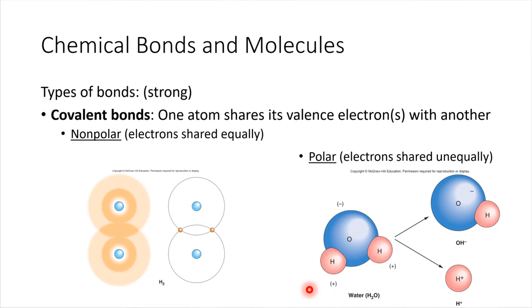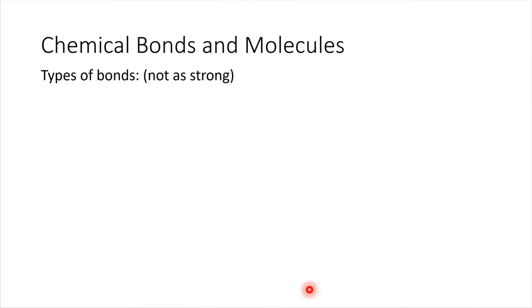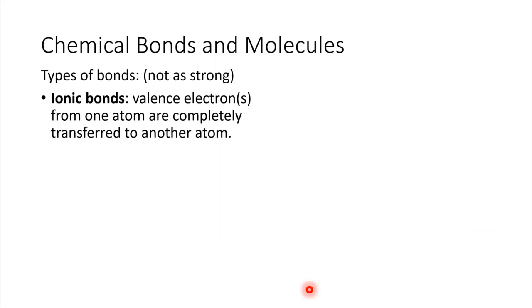We're going to come back to this polarity in just a bit. It has a number of very important consequences. So covalent bonds, that's our first type of bond. Our second type of bond is not quite as strong. It is an ionic bond. Ionic bonds also involve valence electrons. But what happens in this case is instead of sharing a valence electron, the valence electron completely gets transferred from one atom to another.